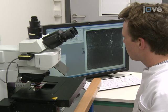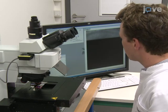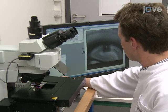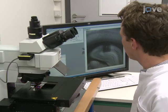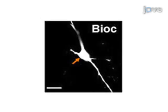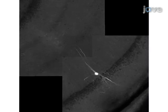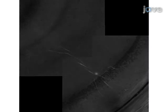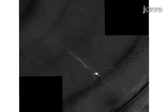Assess the parvalbumin immunoreactivity of the interneuron with a high magnification and numerical aperture objective lens. Cells are deemed immunoreactive for parvalbumin if immunolabeling is seen to align with the biocytin-labeled structures. Take a Z-axis series of images with a laser-scanning confocal microscope, imaging fluorescent avidin for morphological identification and three-dimensional reconstruction.